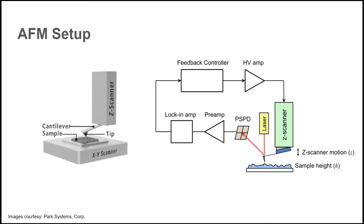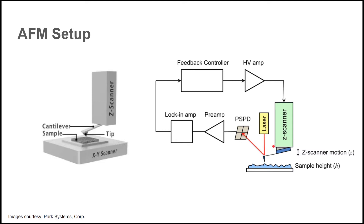Let's turn to some AFM specifics. The hardware components of an AFM consist of a Z scanner, a probe, and an XY scanner. The sample is mounted on the XY scanner, moving side to side. The Z scanner is in a feedback loop. A laser reflects off the probe to the PSPD, the position-sensitive photo detector. The signal from the PSPD feeds back to the Z scanner to control the Z-Piezo. The software will handle much of this feedback loop.